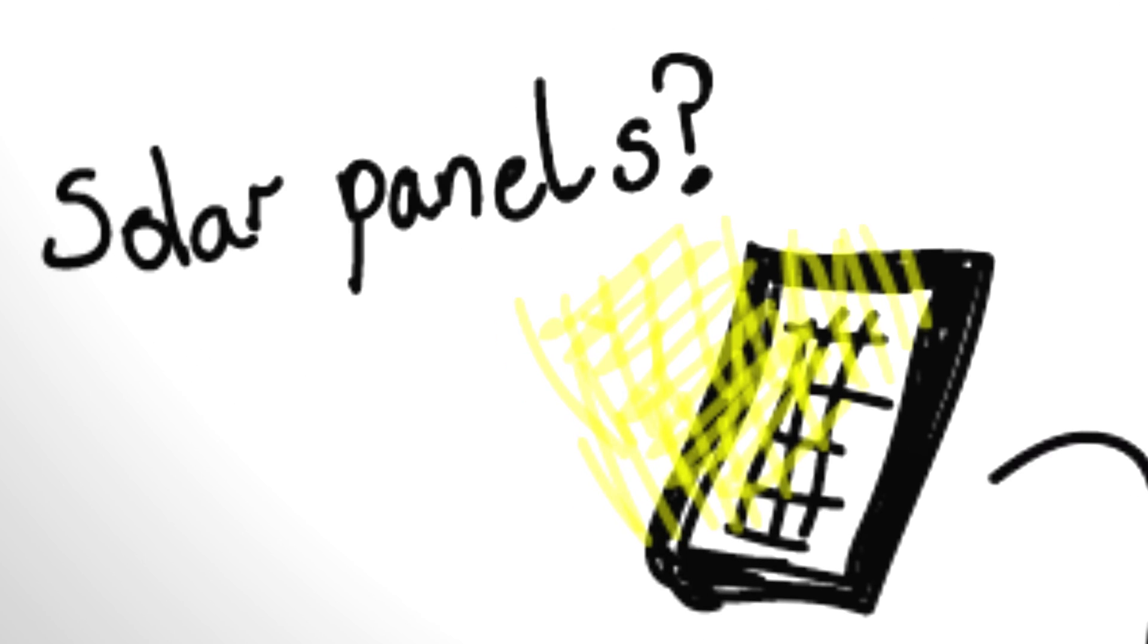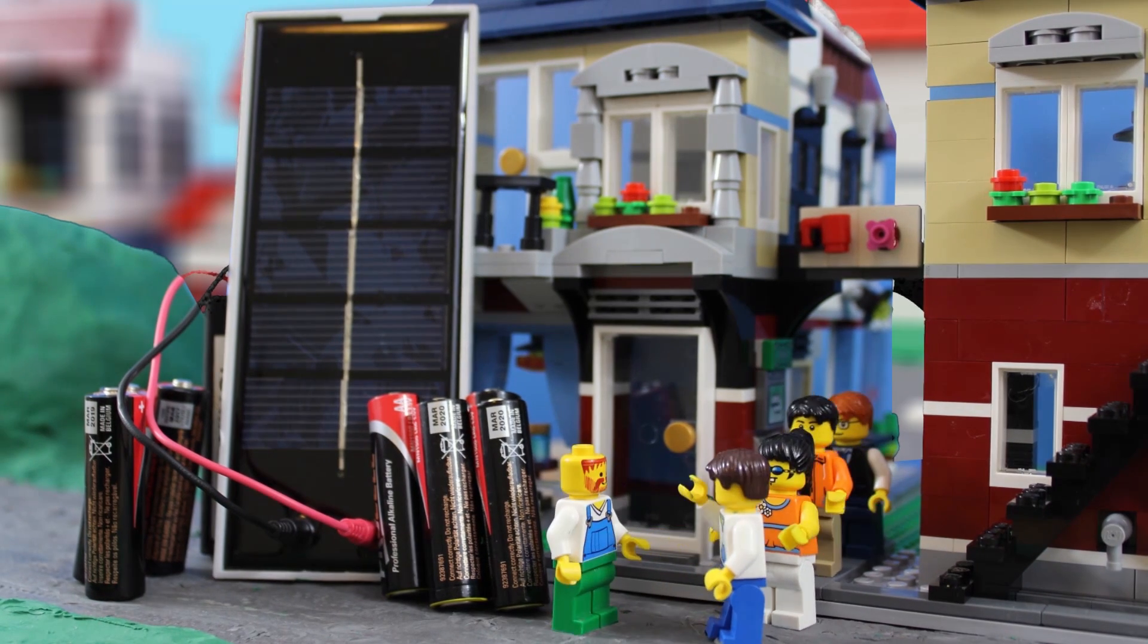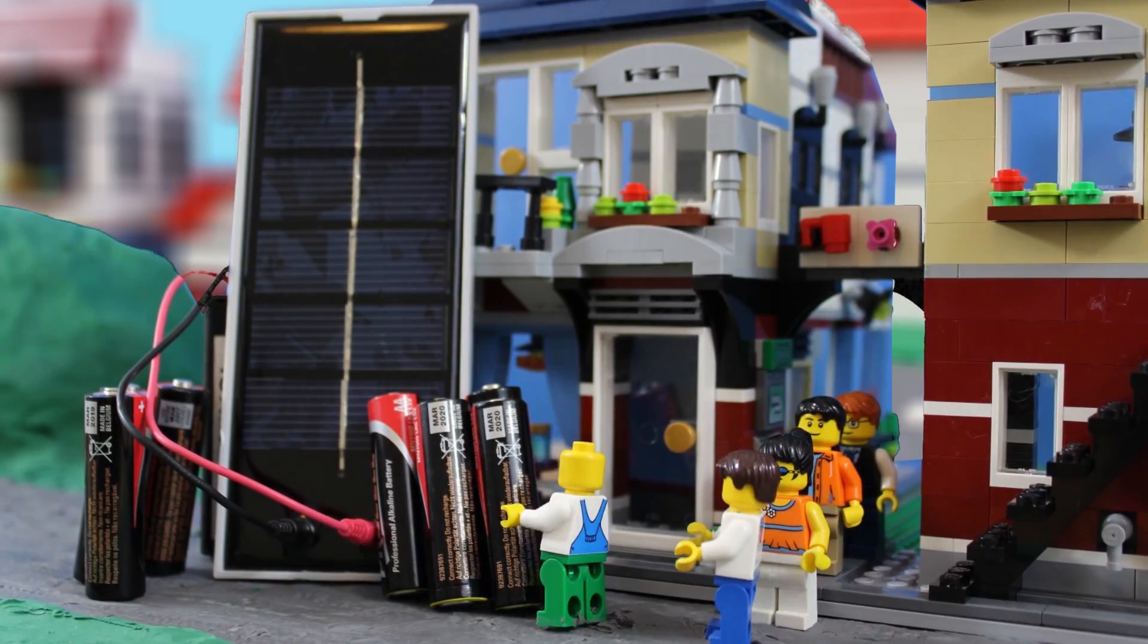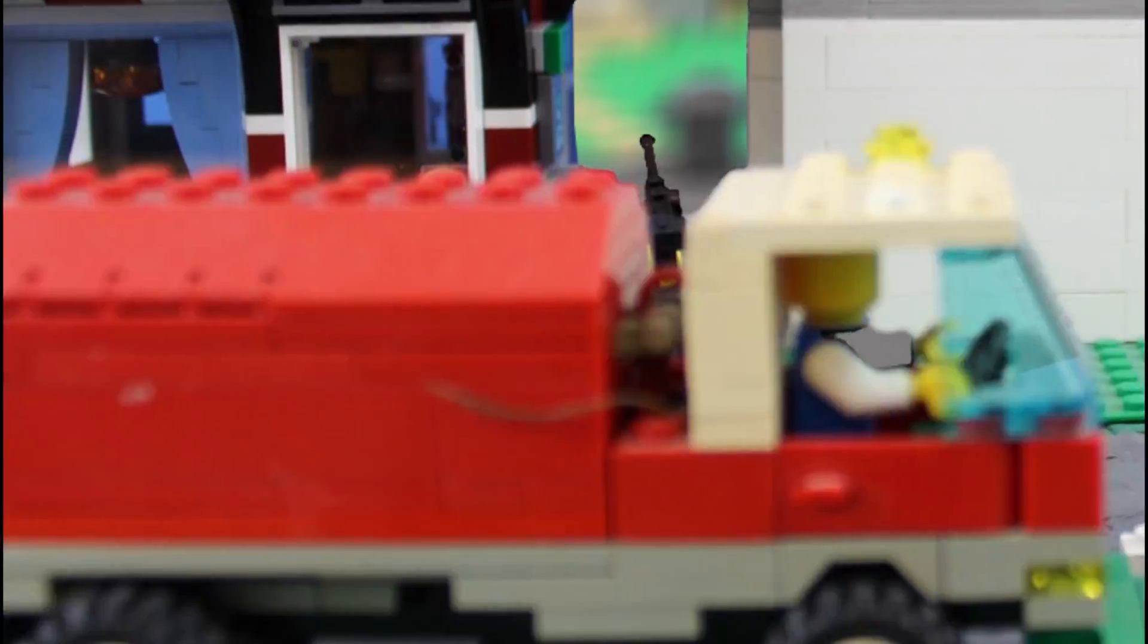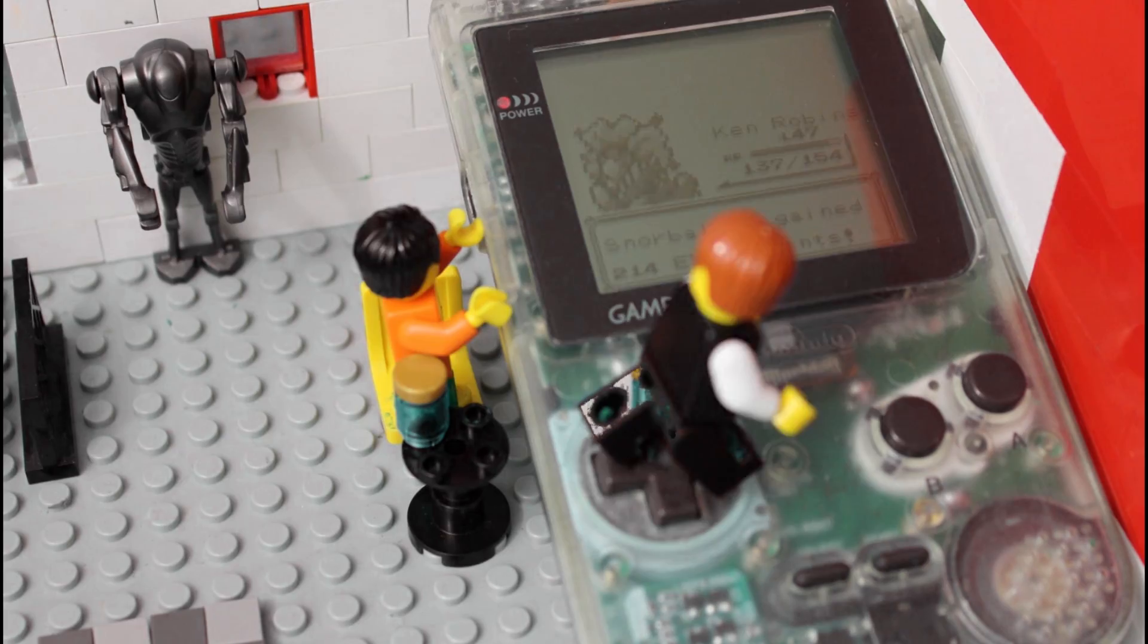The scientists' second idea was to use solar panels to charge batteries. Get your batteries here. They're freshly charged. One battery, please. Batteries are a great way to store energy, and are perfect for small-scale electronics, such as mobile phones, or, if you're from the 90s, Nintendo Game Boys.